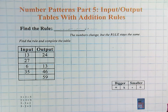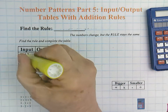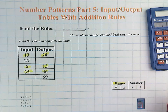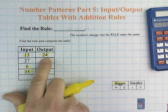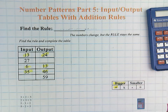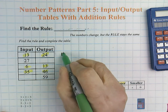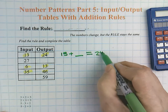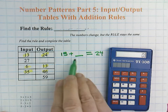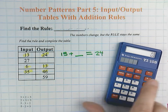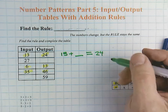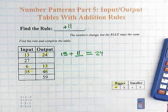Pause and go ahead and solve. Find the rule and complete the table. I'm seeing inputs of 13 and outputs getting bigger — 13 to 24, and 35 to 46. I know that 13 times any number is not going to be 24, so this is, once again, an addition rule. Showing my steps: 13 plus blank equals 24. Using fact families: 24 minus 13 equals 11. So our rule here is a plus 11 rule.